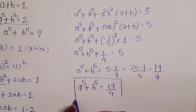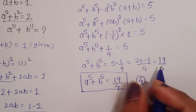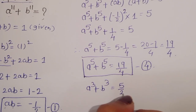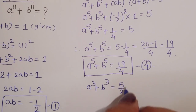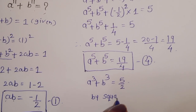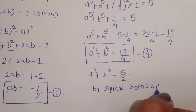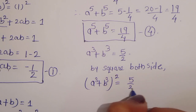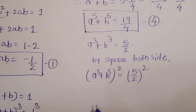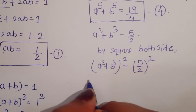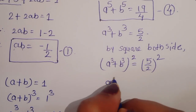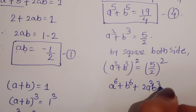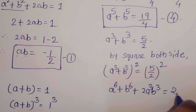From equation 2, a cube plus b cube is equal to 5 upon 2. Squaring both sides: (a cube plus b cube)² = (5 upon 2)², which gives a power 6 plus b power 6 plus 2a³b³ is equal to 25 upon 4.